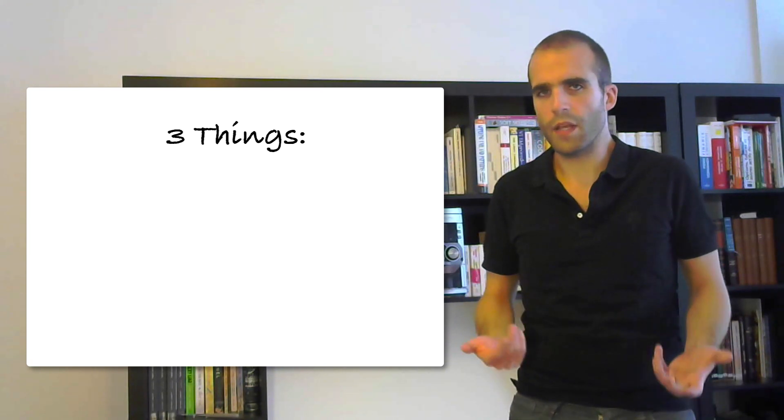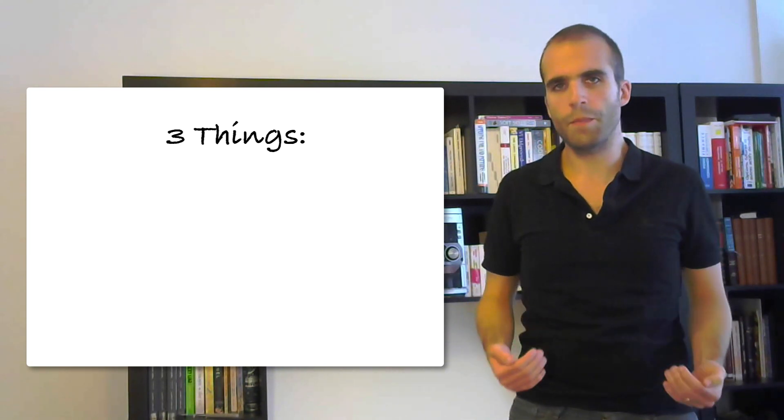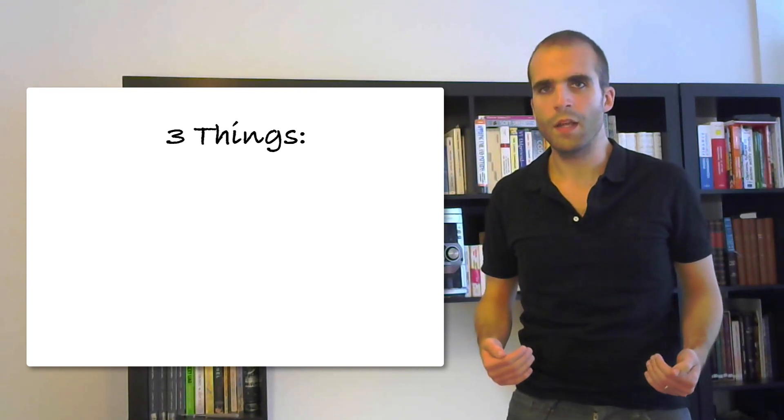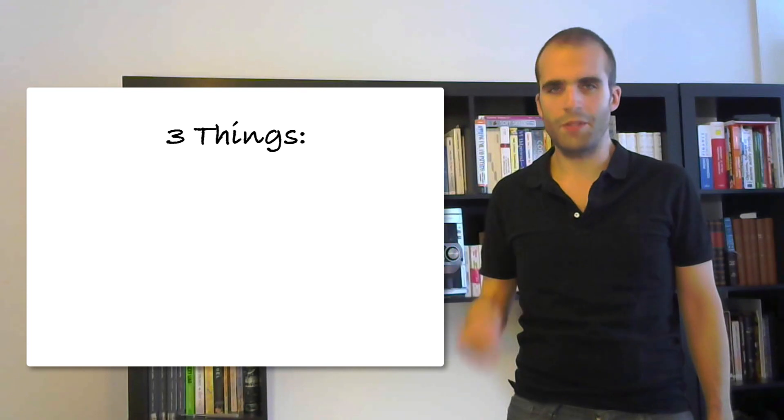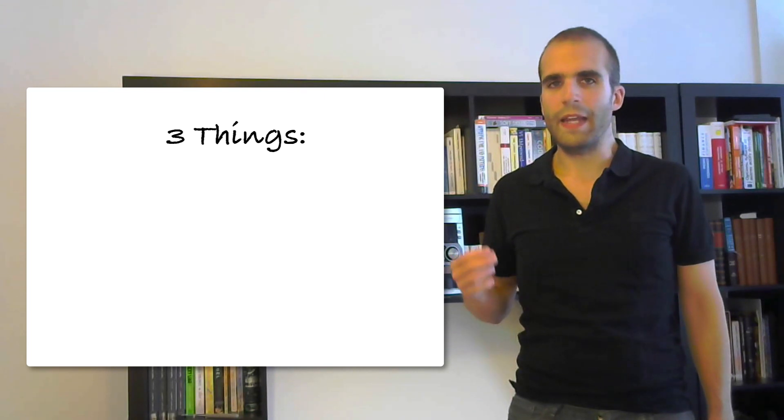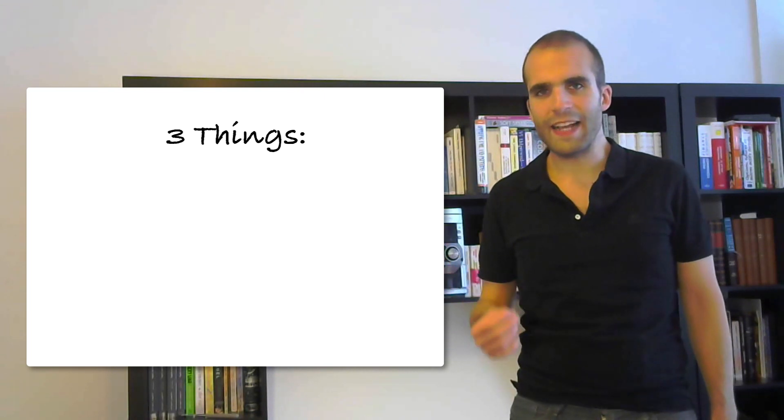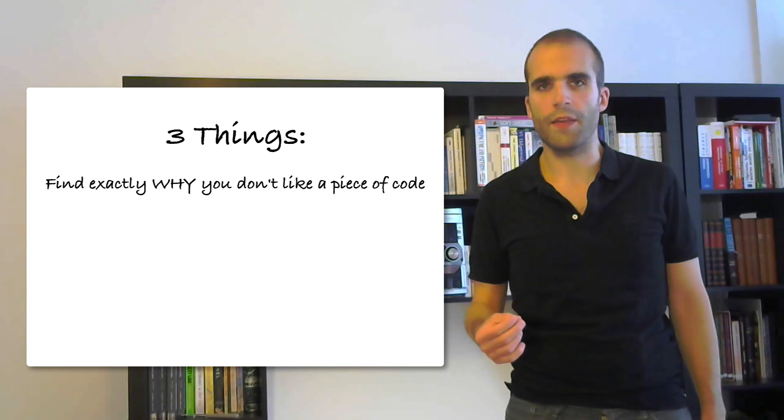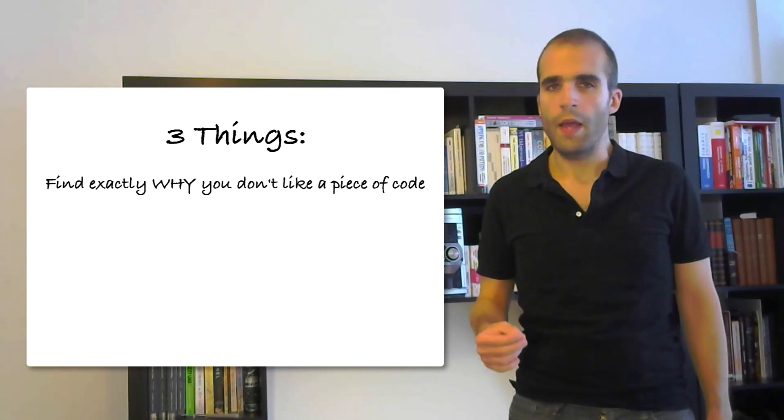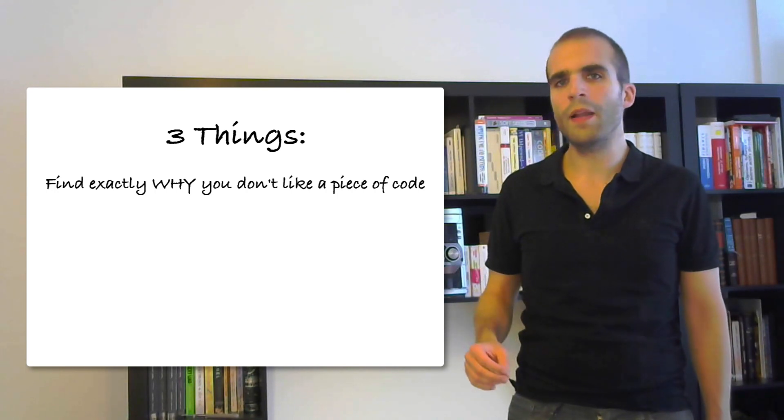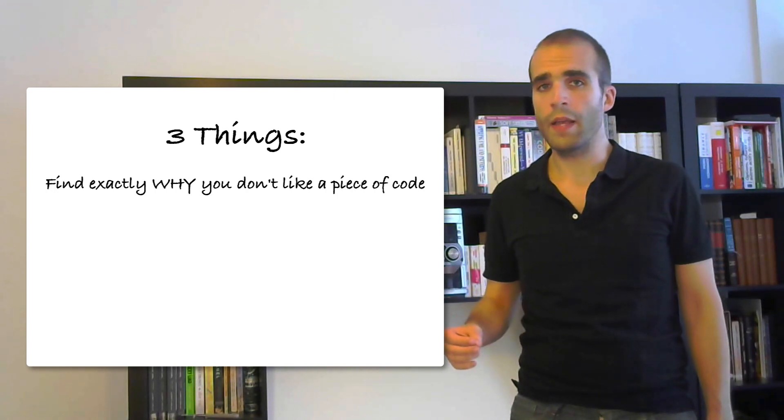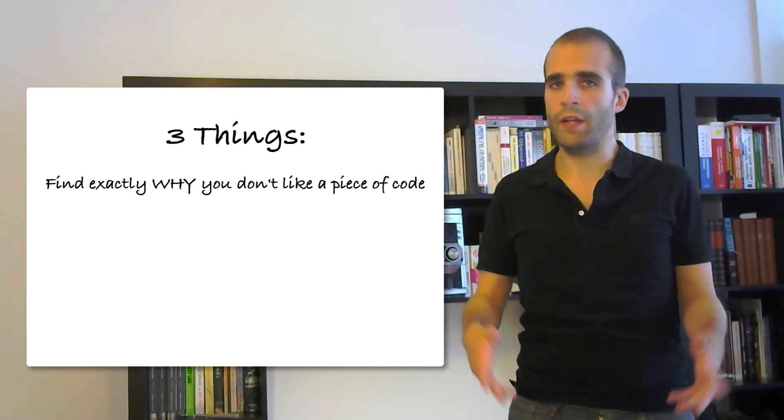So that's the natural way to go. Once you've gone past that first reaction, there's one more thing that you can do that's much more useful. It is finding exactly why you don't like that piece of code. And when you try to do that, you see that it's not that easy to formalize exactly what is wrong in a piece of code or in an interface.